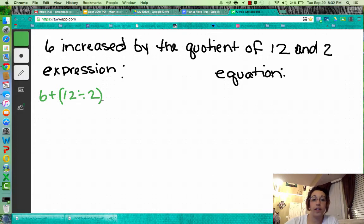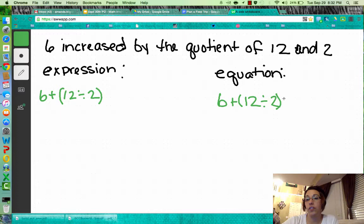So our expression looks like this. When we write an equation, it's going to be the same thing. The only difference is we add an equal sign. And then we start working this with the order of operations. So 12 divided by 2 is 6. We copy down the rest and 6 plus 6 equals 12. So let me set up for another problem here and we'll work it together.